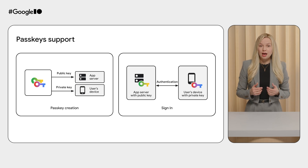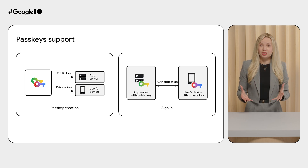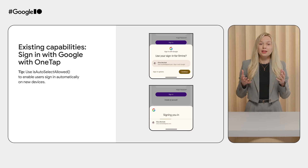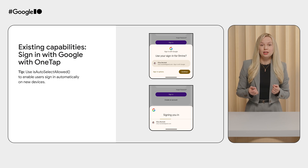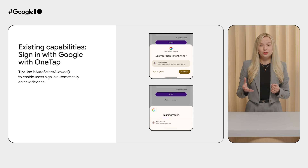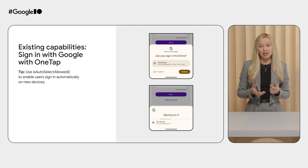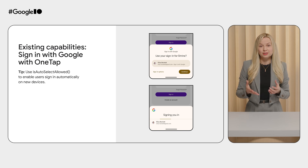Passkeys are built on the WebAuthn standard and supported by all major phone platforms and operating systems. Passkeys are synchronized between users' devices via credential providers such as Google Password Manager, so even if they lose their device, they won't lose access to their credentials. The Credential Manager API is the preferred solution to implement sign-in with Google in your Android apps. Sign-in with Google allows users to use their existing Google account to sign in or sign up seamlessly. Credential Manager fully supports the familiar one-tap flow, so users can sign up or sign in with just a single tap. Sign-in with Google also supports auto-signing for returning users when auto-select is enabled, so users sign in automatically on a new device.